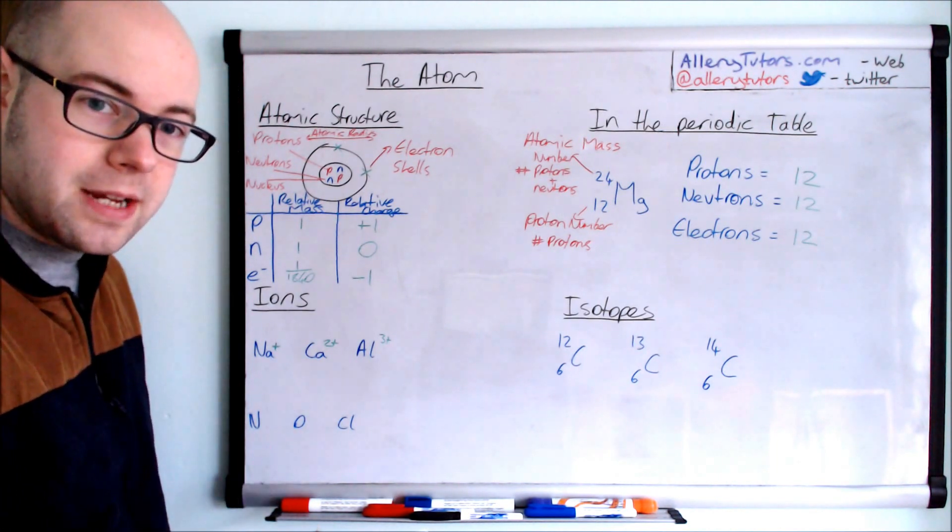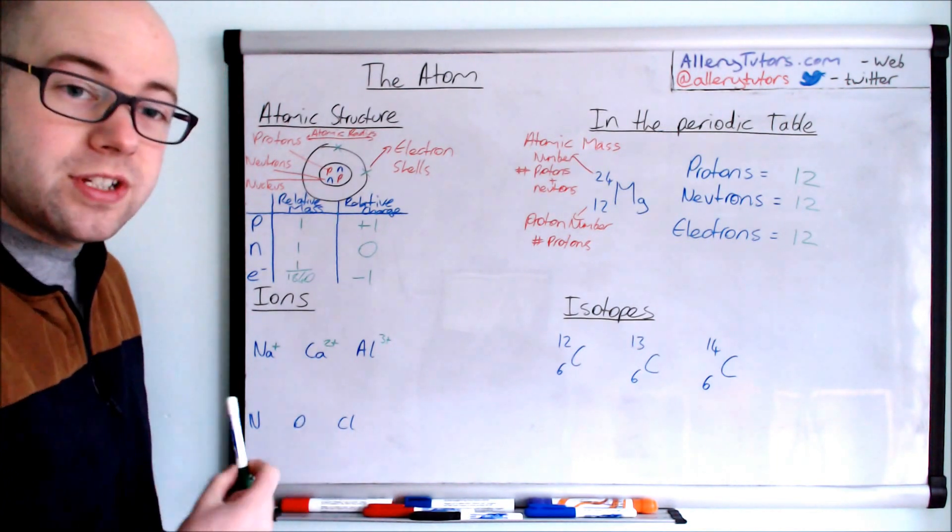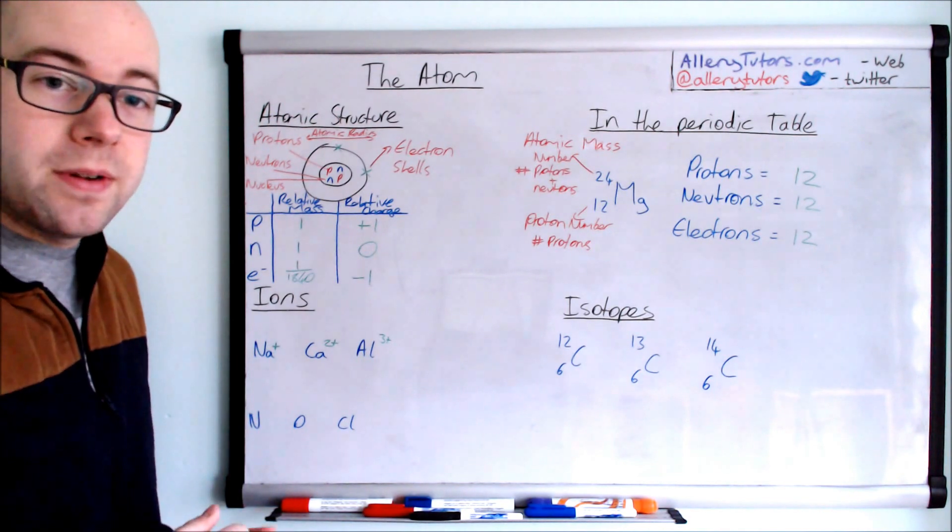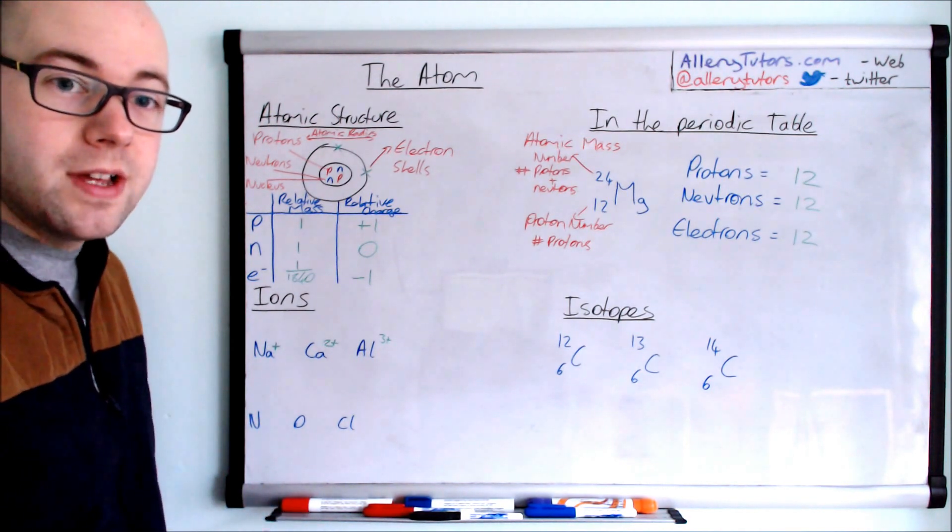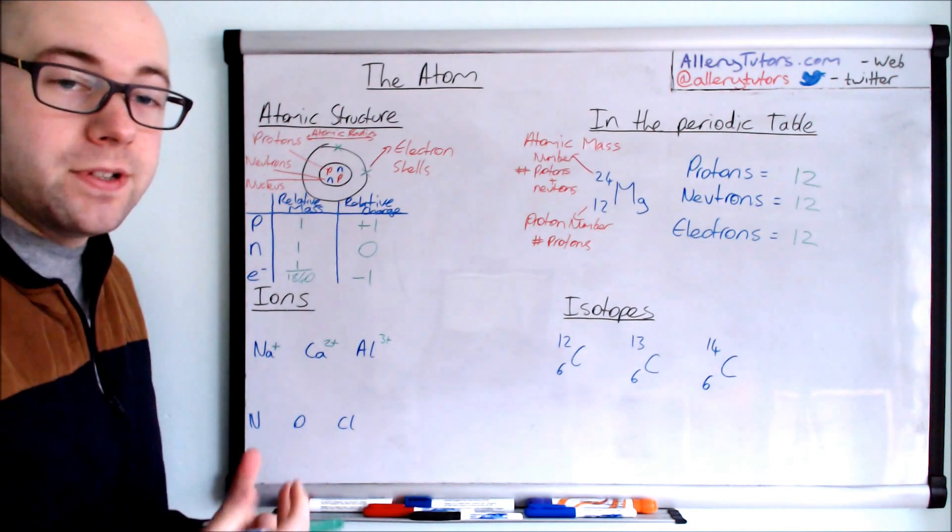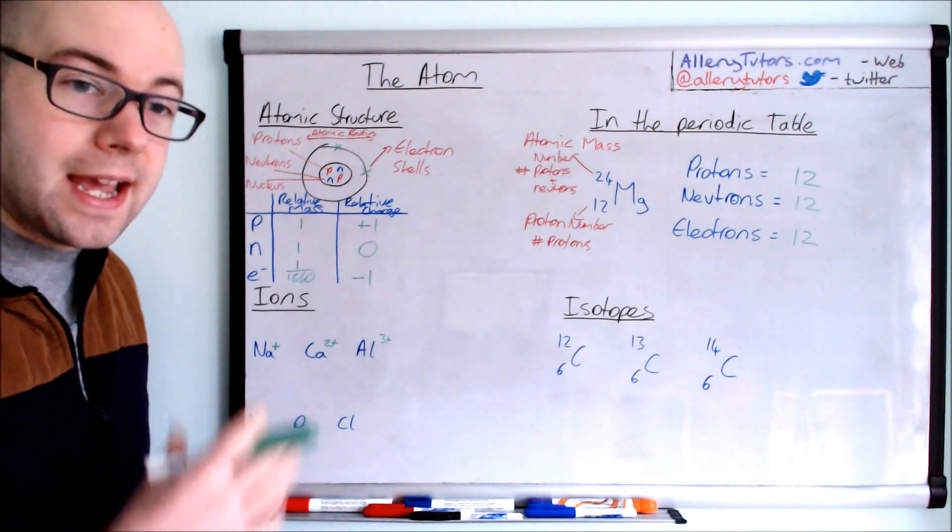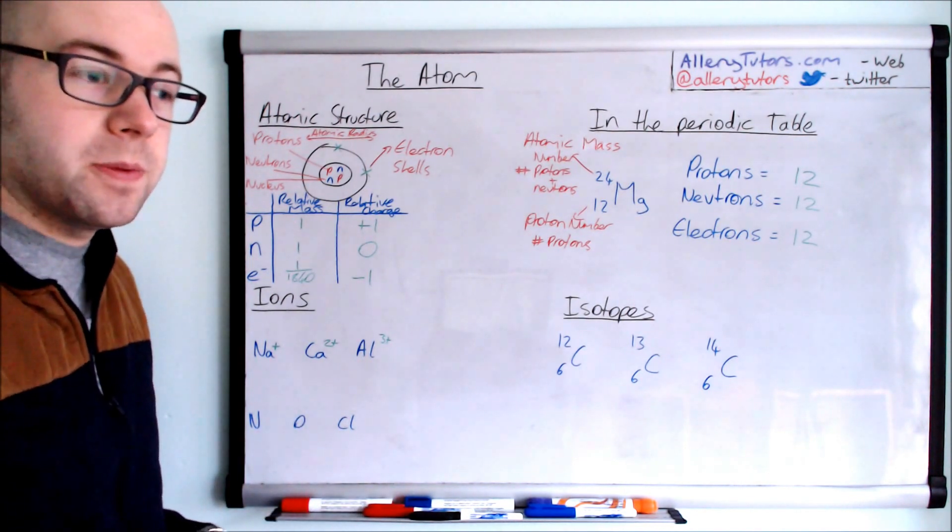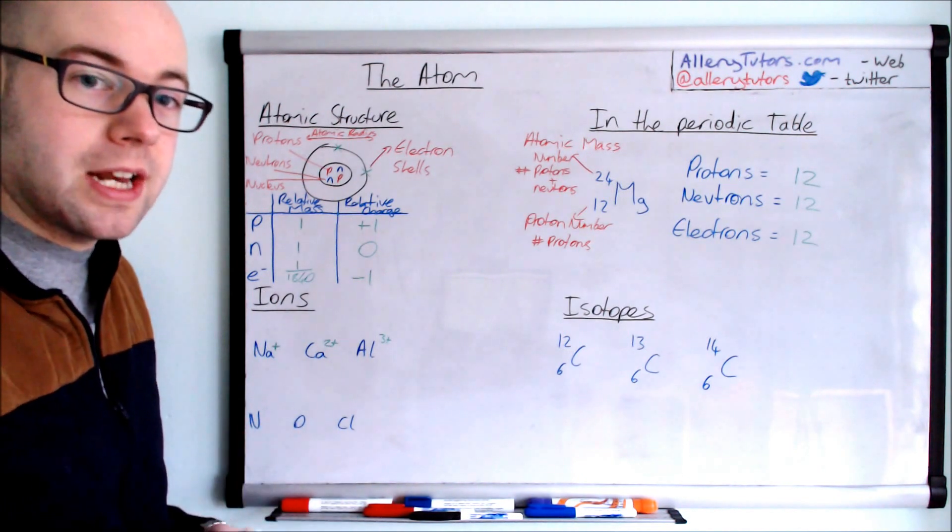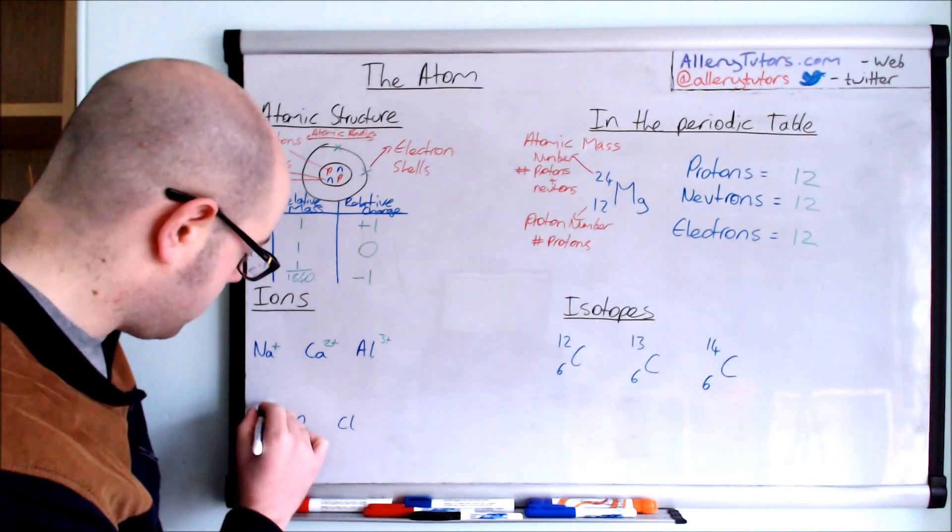On the other side of the periodic table then, is nitrogen. Nitrogen is in group five. So it has five electrons in its outer shell. To get their full stable configuration, it needs to gain three electrons rather than lose five. So because it's gaining three negatively charged electrons, it will form a three minus charge.